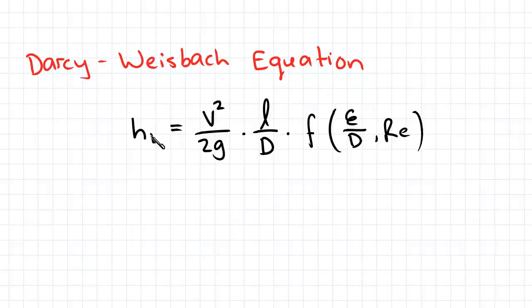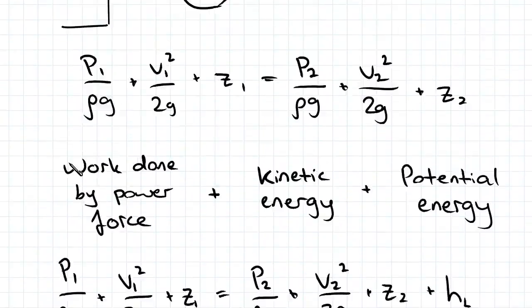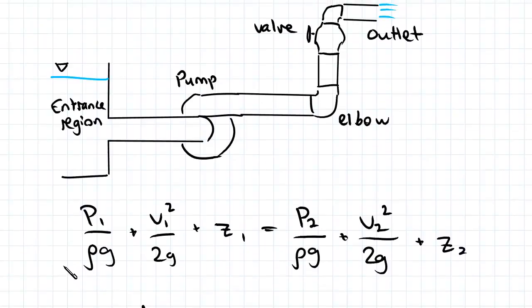There's a distinction between major and minor losses. Major losses are the losses incurred due to the roughness of the pipe, so frictional losses. Minor losses are those incurred due to disturbances in the pipe, so as I showed up here. Minor losses are to do with pumps, valves, elbows, and entrance regions. We won't be considering minor losses in this course, but they do exist.